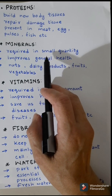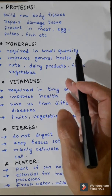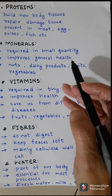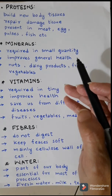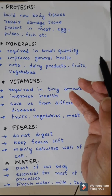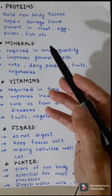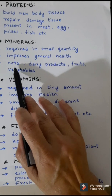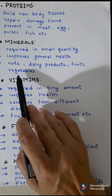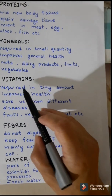Minerals are another important component of food, but they are required in small quantities. The human body needs a wide range of minerals. For example, calcium is very important for the growth of bones and teeth. The hemoglobin in red blood cells contains iron, which is one of the important minerals. Minerals are present in nuts, dairy products, fruits, vegetables, etc.